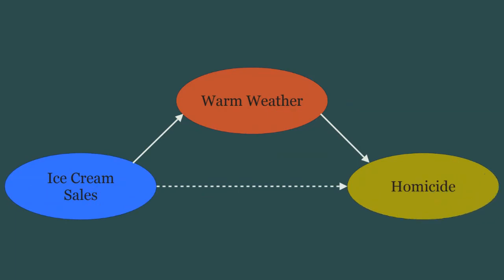So we do a little digging and it turns out that both ice cream sales and homicides are associated with warmer weather. As such, warmer weather mediates the association between ice cream sales and homicide.